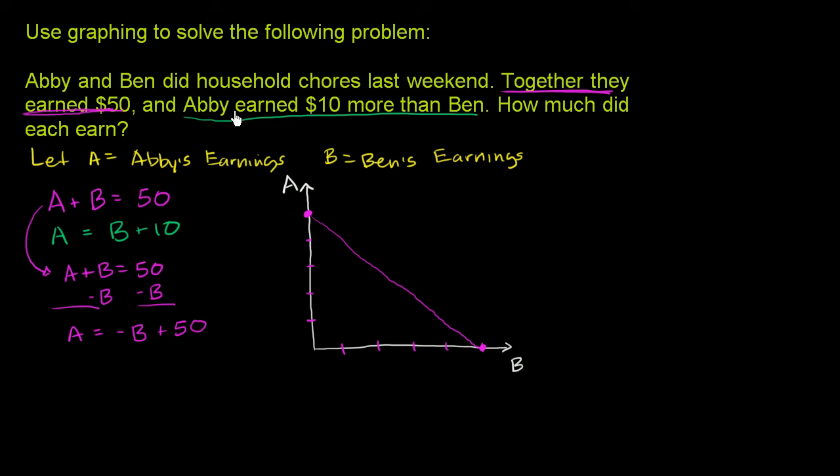Now let's think about the second one. Abby earned $10 more than Ben. That's this equation here, and it's already in slope-intercept form. If Ben made $0, Abby would make $10. That's our A-intercept, right over there.